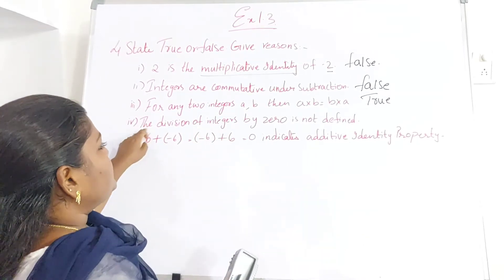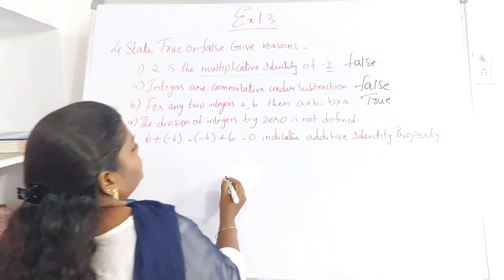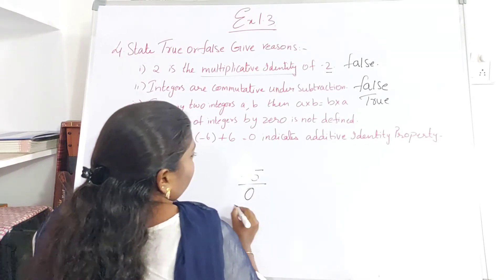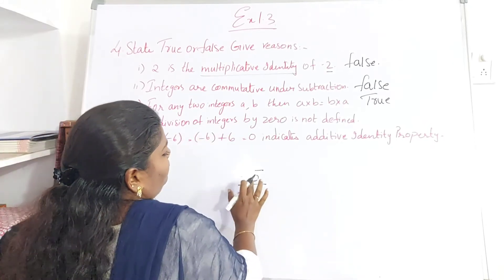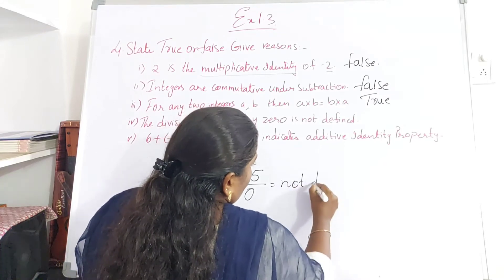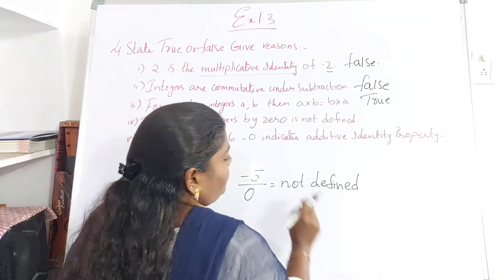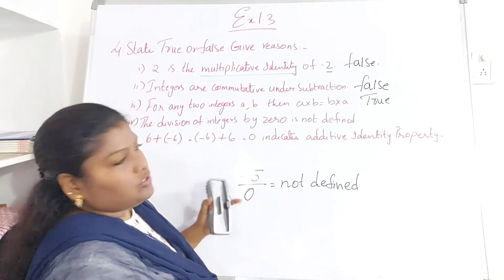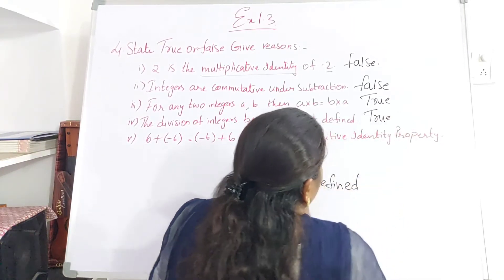The next one: division of integers by 0 is not defined. Any integer divided by 0 — for example, minus 5 by 0 — is not defined, because 0 times any number is 0. So this is not defined. This statement is true.